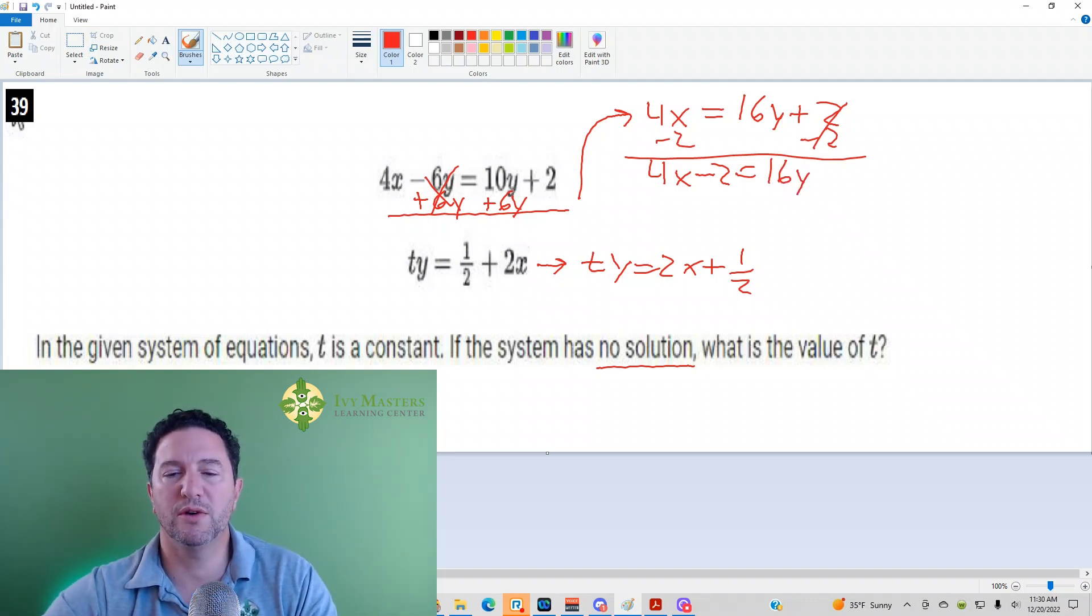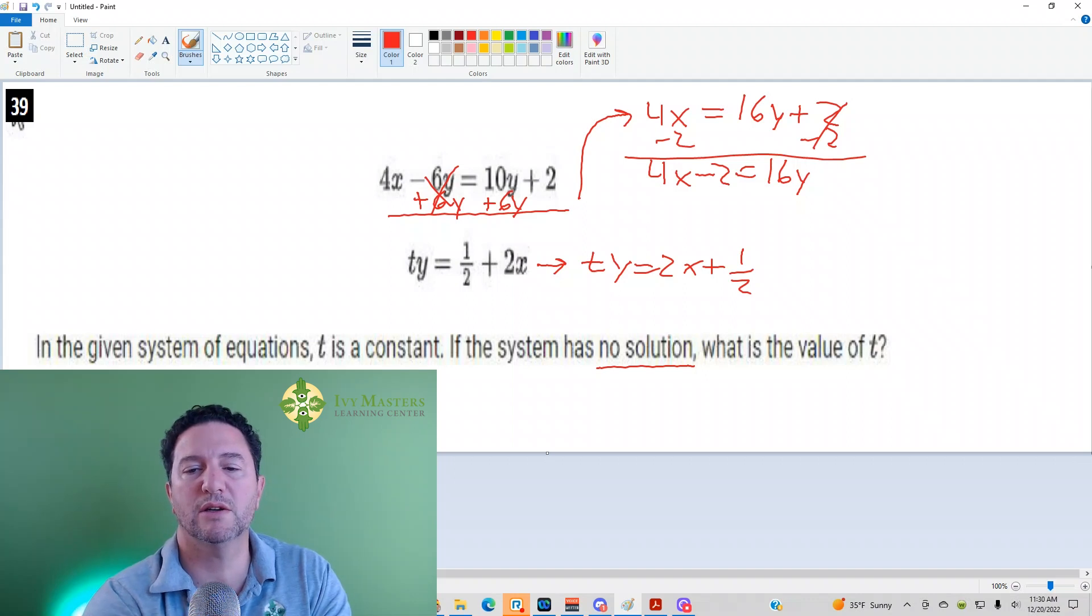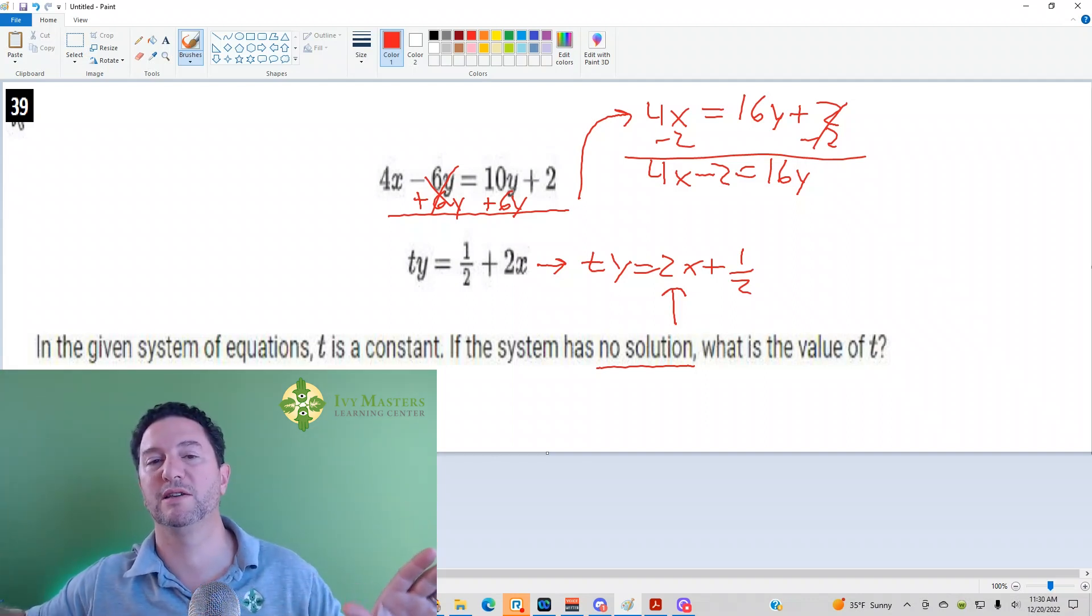Now, I've got 2x in this bottom equation. In order to get what is attached to the x to be the same, I've got to divide both sides by 2.